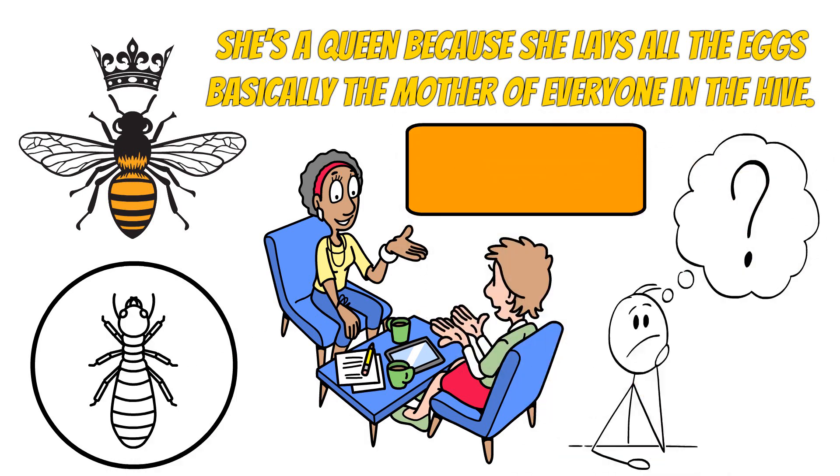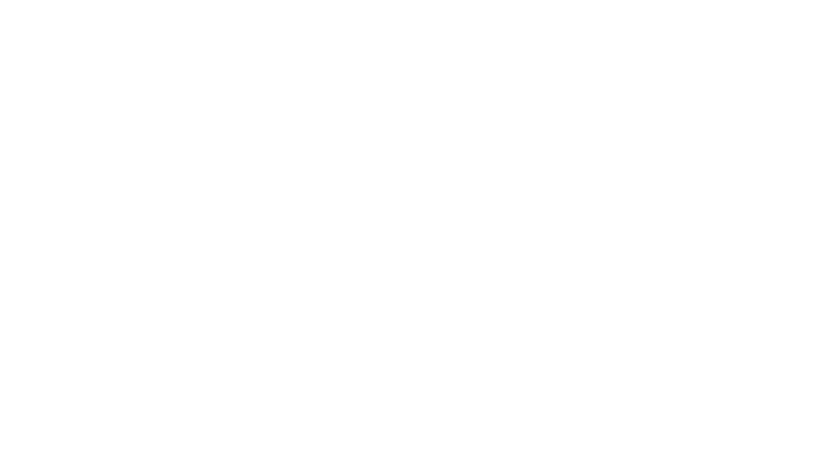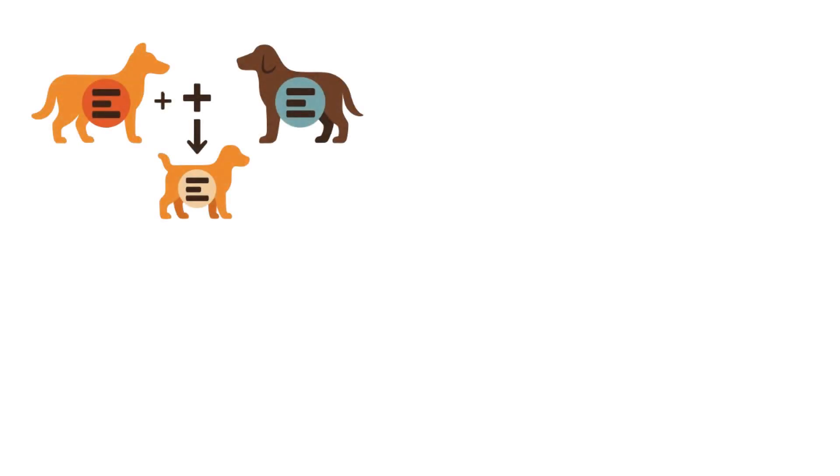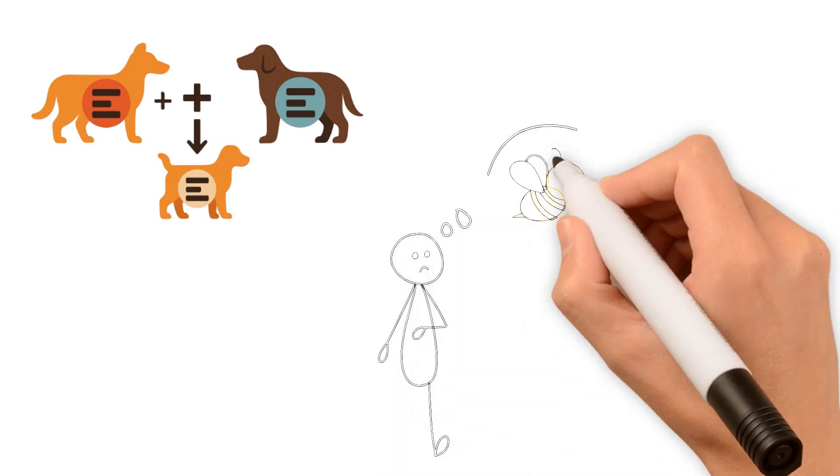Well, bee genetics are bizarre. In most animals, a baby comes from combining half the genes from the mother with half from the father. But bees? Bees laugh at our rules.